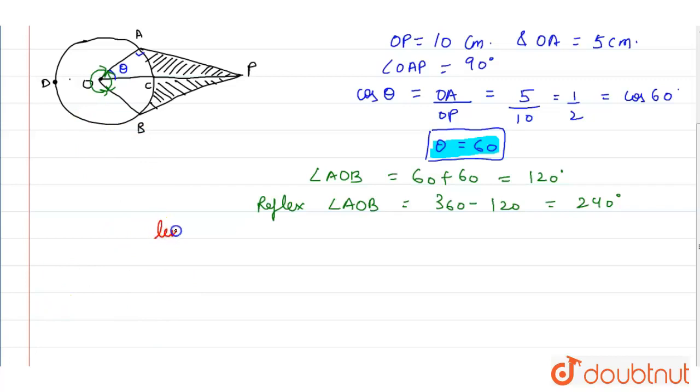Length of major arc is alpha upon 360 into 2 pi into r. So this will be 240 divided by 360 into 2 pi, which can be 3.14, into r is 5 radius. So the length of major arc will be 20.93 centimeter.